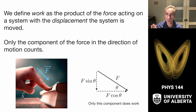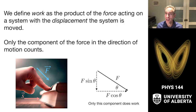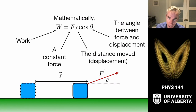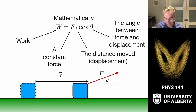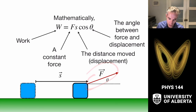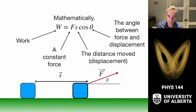The vertical component doesn't move the book in that direction and therefore does no work. If you push on something and the object doesn't move, no work is done — which is counterintuitive. Mathematically, work is W = F·Δx·cos(θ), the component of force in the direction of displacement, encoded via the dot product.